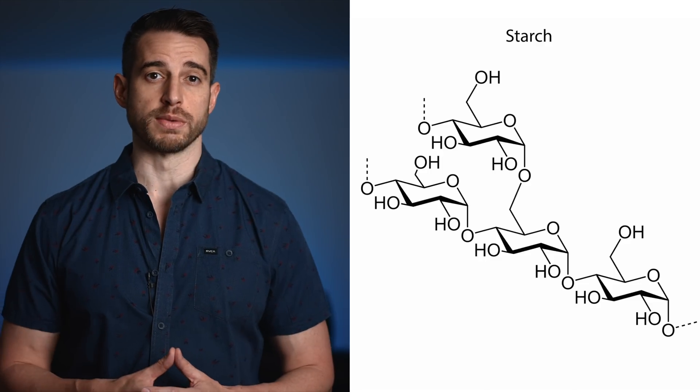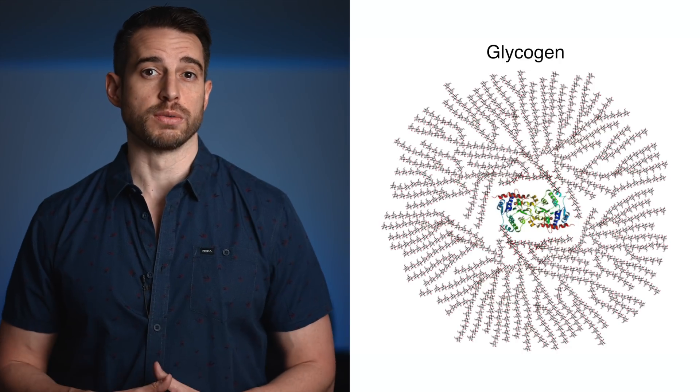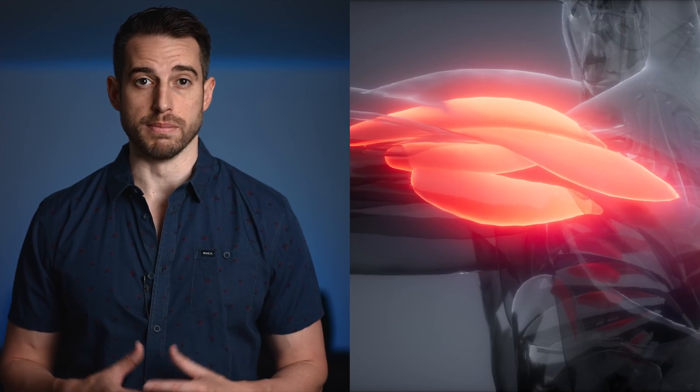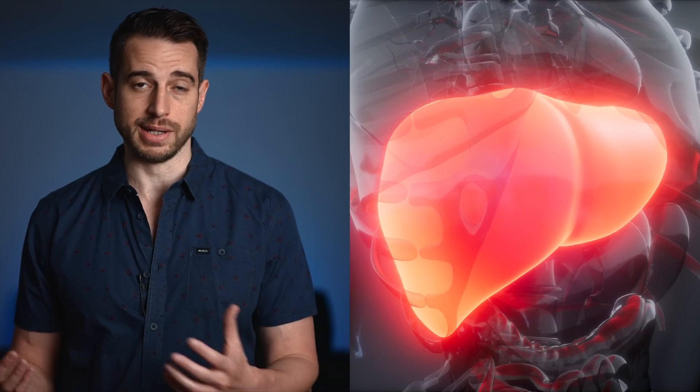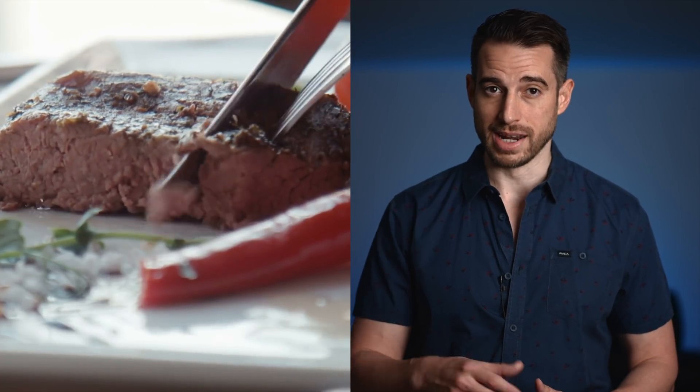Digestible polysaccharides include starch and glycogen. Starch is the storage form of glucose found in plant tissues. Glycogen is the storage form of glucose in the muscle and liver in both humans and animals. A fun fact about glycogen: when you eat meat, you don't actually consume that glycogen because it's already been broken down when the animal died.